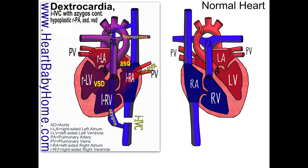We also have an ASD — that's an atrial septal defect — which are holes in the septal wall between the left and right atria. And we have a ventricular septal defect, which is one or more holes in the wall between the left and right ventricles.